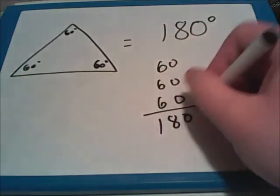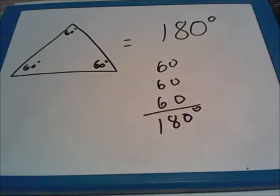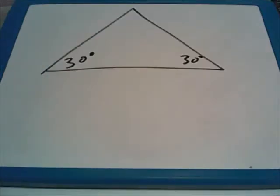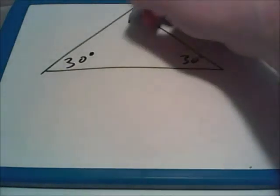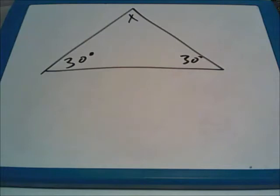Every triangle has to equal up to 180 degrees. Many times you'll be asked to find a missing measurement when looking at triangles. Here they've labeled for us two of the three corners are worth 30 degrees, and they have labeled the top corner as X. So they want us to find the value of X.